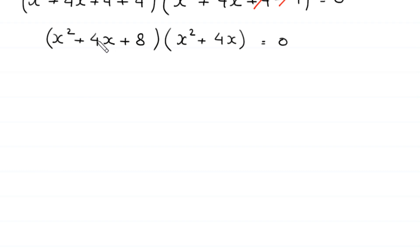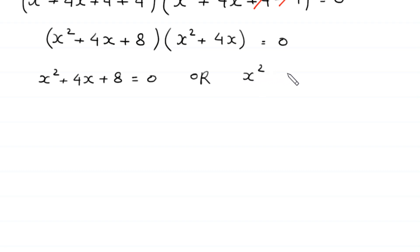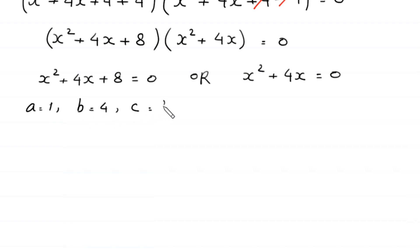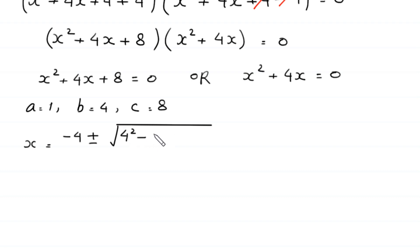From the factored form, either x² + 4x + 8 = 0 or x² + 4x = 0. The first quadratic equation is not factorable, so we solve it using the quadratic formula. Here a = 1, b = 4, and c = 8. So x equals negative b (−4) plus or minus the square root of b² − 4ac, all divided by 2a.